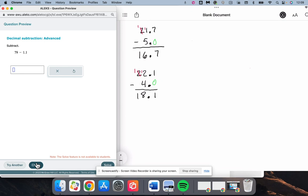Okay. 79 minus 1.1. We need to recognize the decimal is after the 9 there. 1.1. And if putting a 0 in the empty slot helps you, do that.